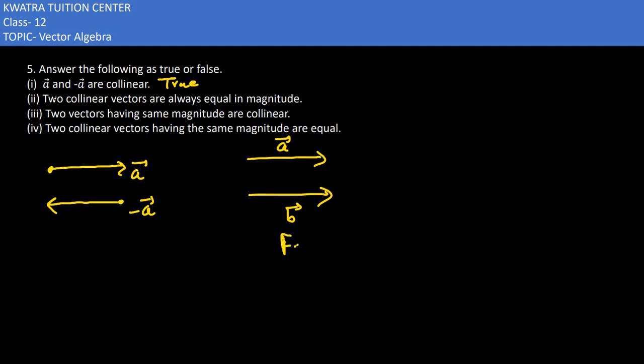So it would be false. The second one would be false. Now the C part, it says two vectors having same magnitude are collinear. Two vectors are same and their magnitudes are same. Let's say this is A and let's say this is B vector. The magnitudes are same, but is it collinear? No.